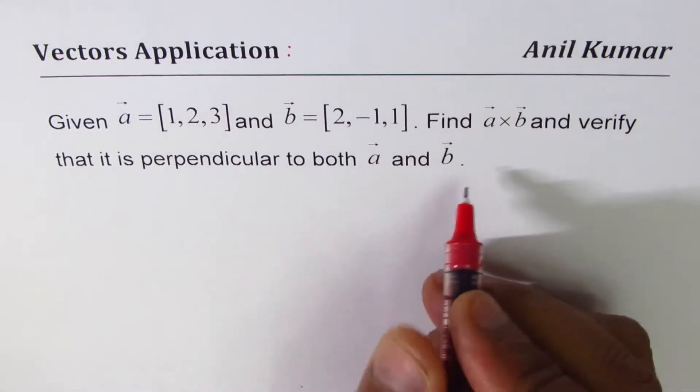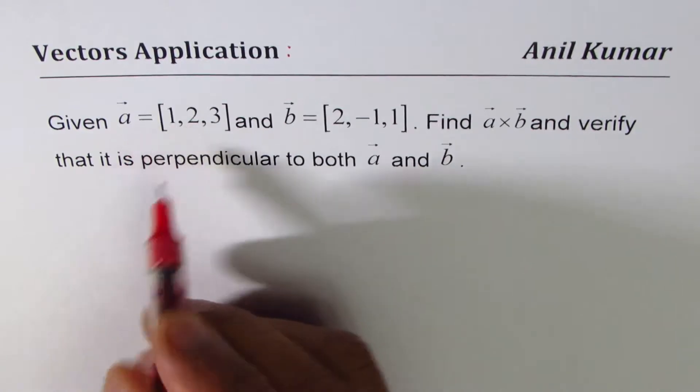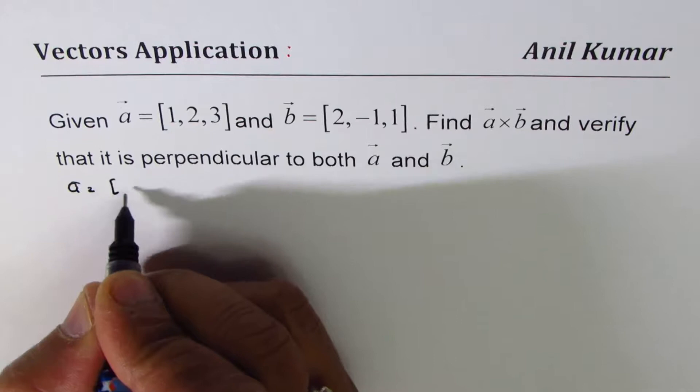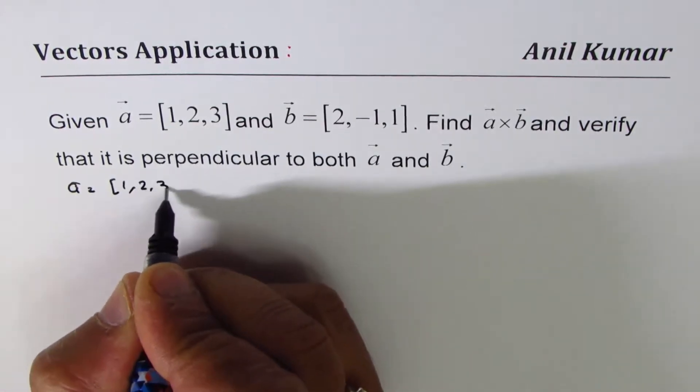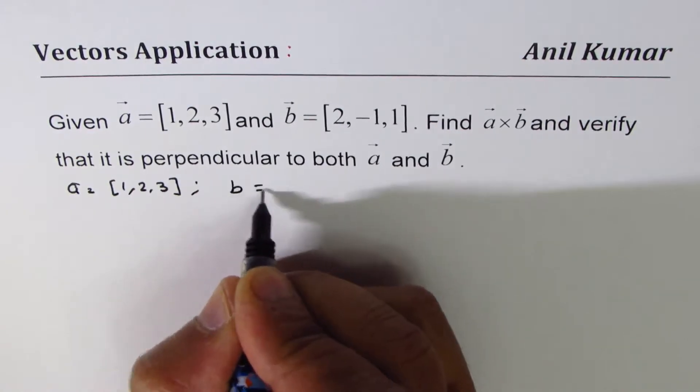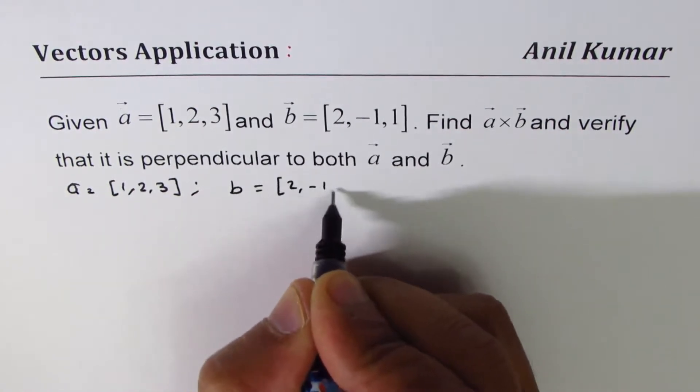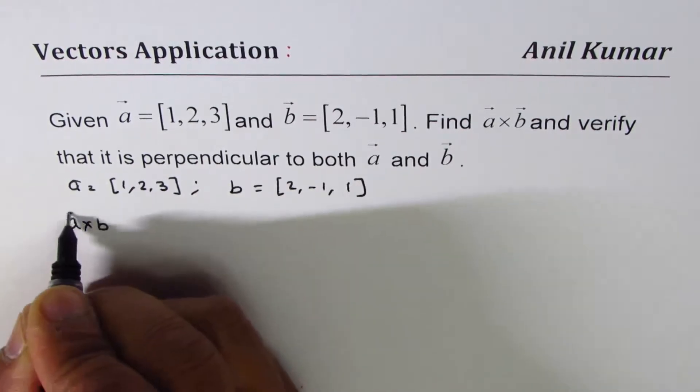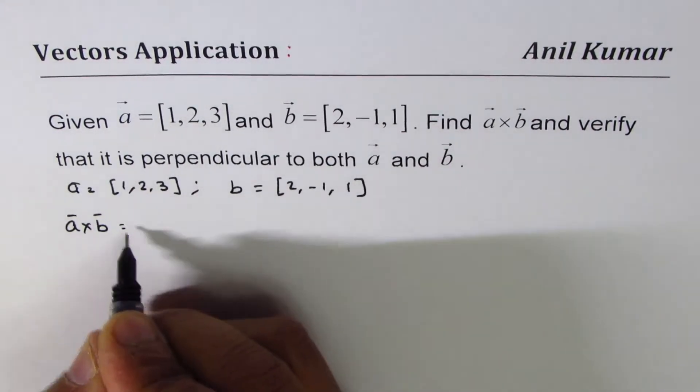Vector a is given to us as [1,2,3], vector b is [2,-1,1]. We need to find a×b. There are different ways to find it. I use a matrix method.